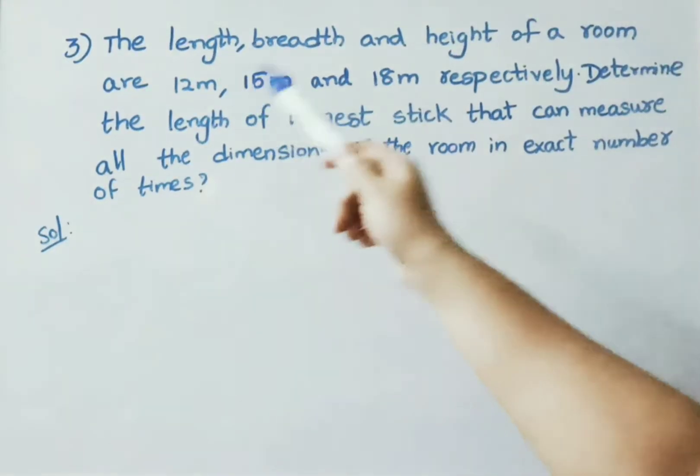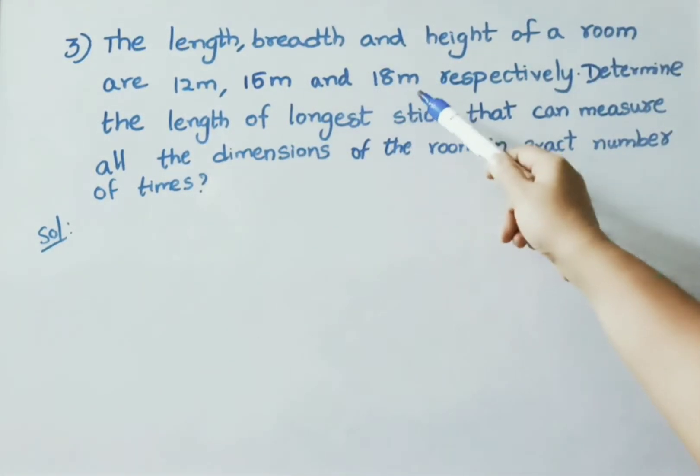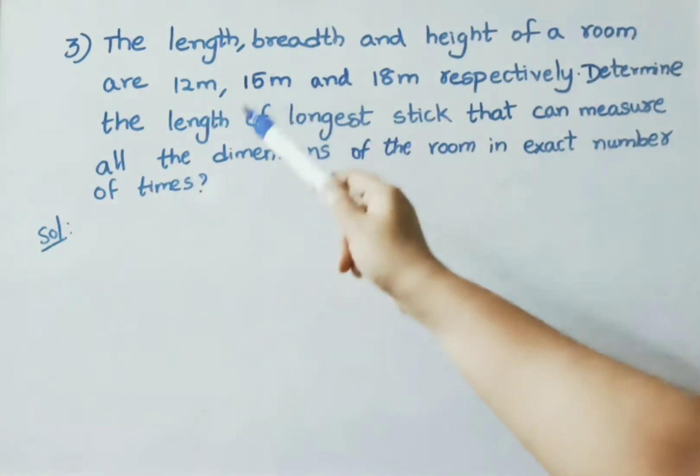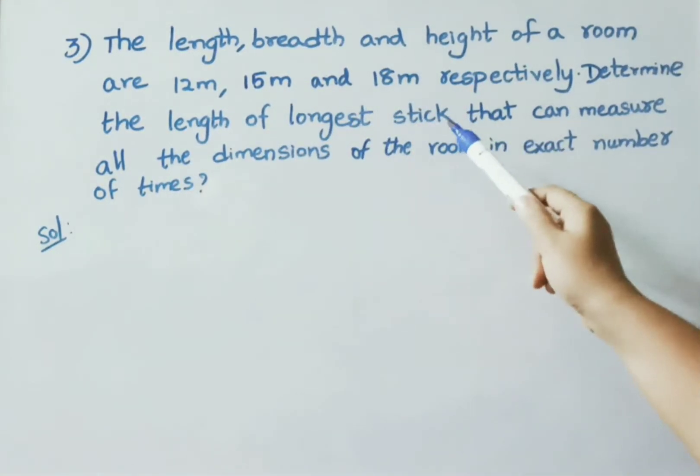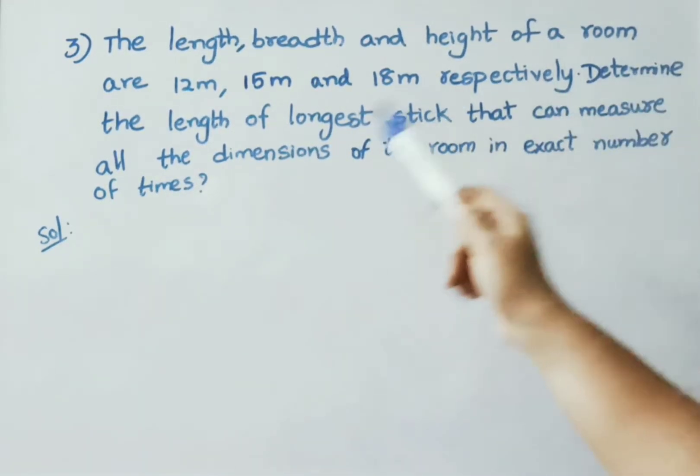See now, the length, breadth and height of a room are 12 meters, 15 and 18 meters respectively. Determine the length of longest stick that can measure all the dimensions of the room in exact number of times. That means the HCF of 12, 15 and 18 will give us the length of the longest stick that can measure all the dimensions of the room exactly. Now, let us see the solution.